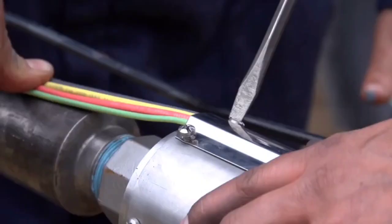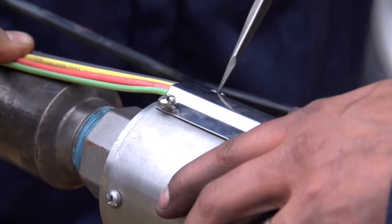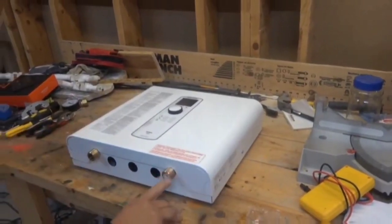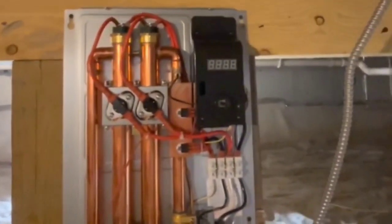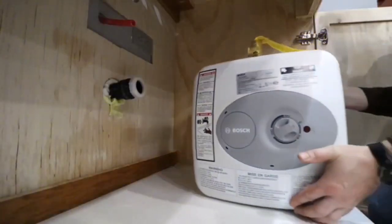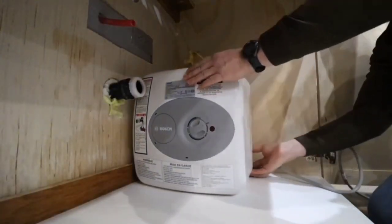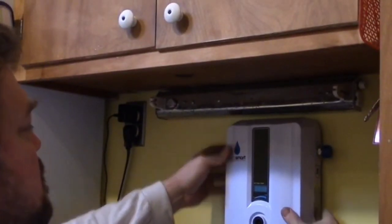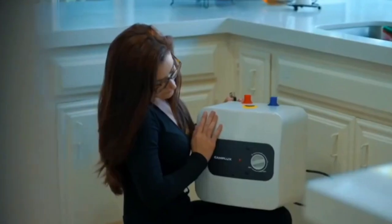Cutting down on energy costs is easy with smart water heaters, considering that heating water constitutes about 20% of a home's energy usage. These intelligent devices allow remote control, so you can turn the heater on or off from anywhere, preventing unnecessary energy consumption when no one is at home.